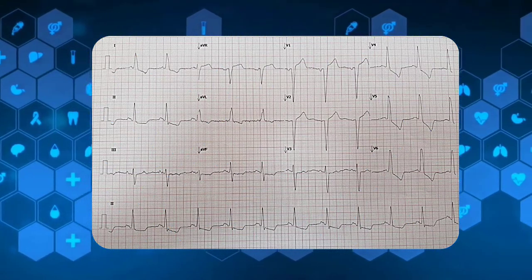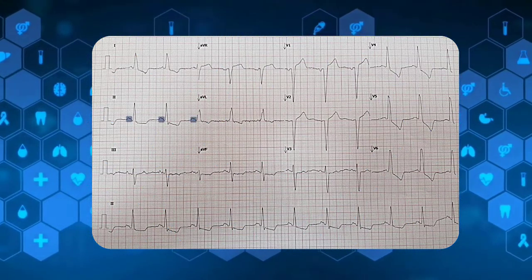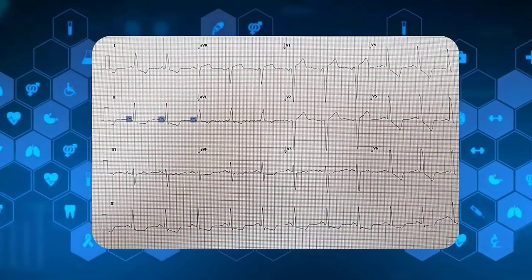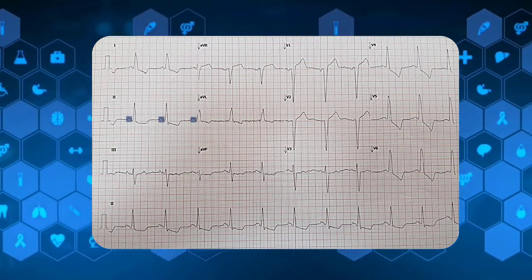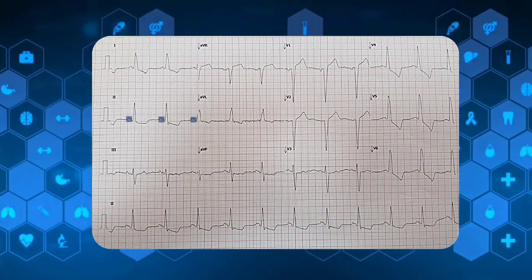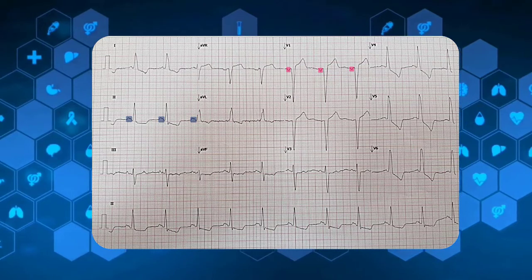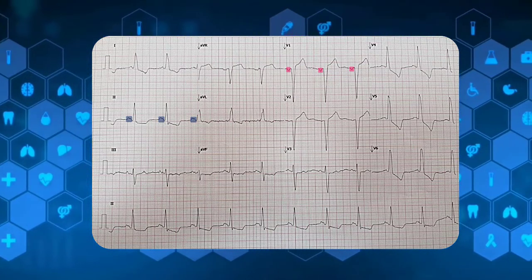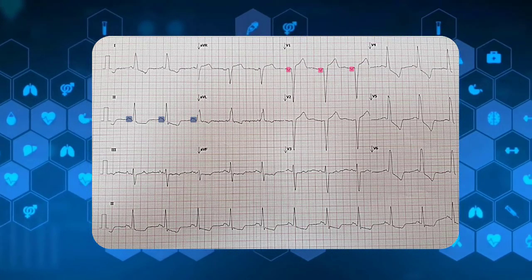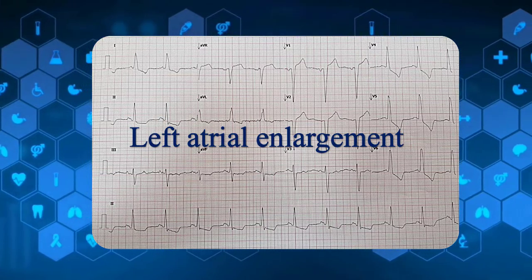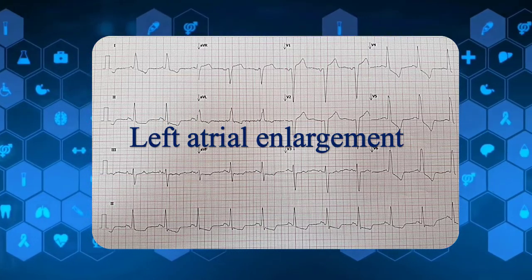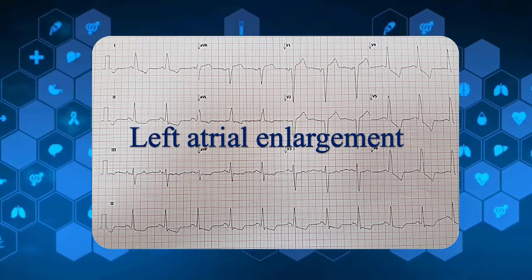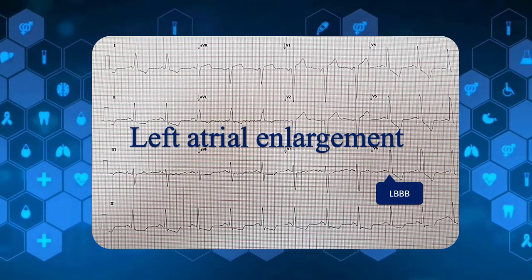Let's go through another example. In this strip, the P waves are oddly broad. The duration of the P wave is approximately 3 small squares. Both the amplitude and duration of the negative portion of the P wave in lead V1 are more than 1 small square. So, according to definition, left atrial enlargement is present. The broad QRS complex is due to left bundle branch block.